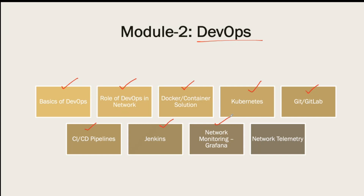We'll also cover network monitoring using Grafana as a tool, creating custom dashboards for network monitoring using network telemetry and different mechanisms to leverage that. As we progress through the DevOps modules, we will also integrate them with our network automation so that things make more and more sense. I understand you're coming from a networking background, so some of this may sound like buzzwords — but I will make sure those buzzwords start making sense to you.